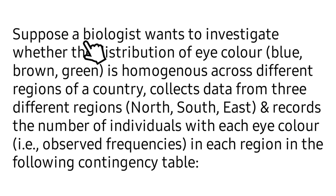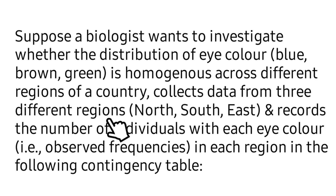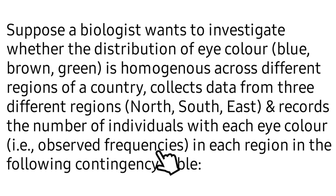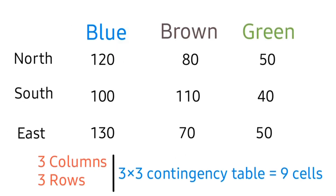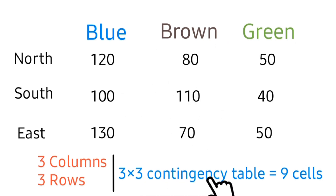Suppose a biologist wants to investigate whether the distribution of eye color — that is blue, brown, and green — is homogeneous across different regions of our country. The biologist collects data from three different regions: north, south, and east, and records the number of individuals with each eye color, that is the observed frequencies in each region, in the following contingency table. The table has three columns (blue, brown, green) and three rows (north, south, east), making it a three-by-three contingency table resulting in nine cells.